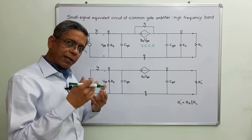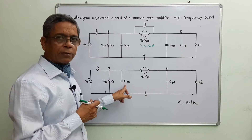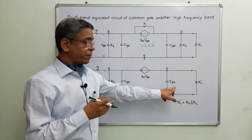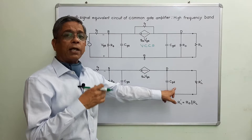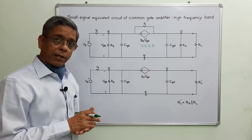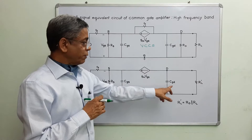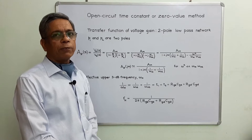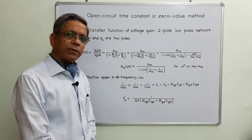I will get the time constant for CGS from the Thevenin equivalent resistance. In the second step, I select CGD and consider CGS as open circuit by putting CGS equal to zero. Then I find the resistance seen by CGD — the Thevenin equivalent resistance across the terminals of CGD — and get the time constant for that capacitor. I will then derive the expression for upper 3dB frequency using these time constants.